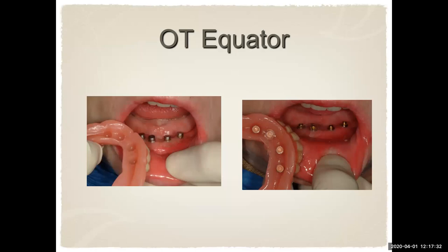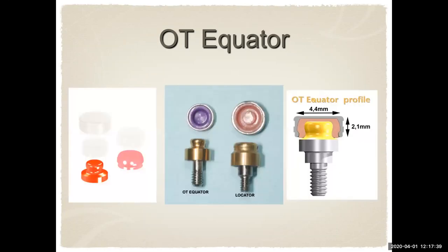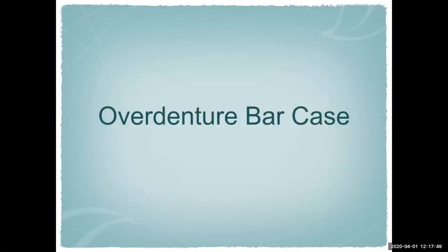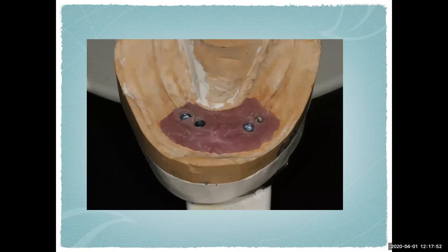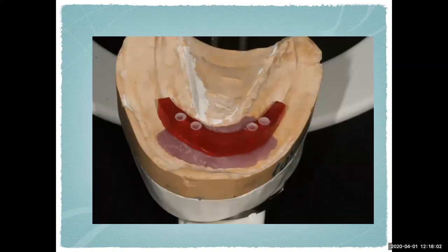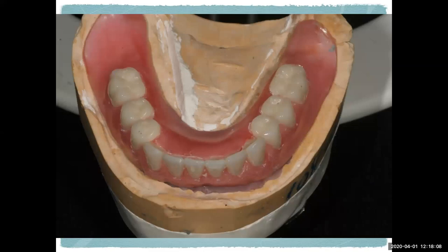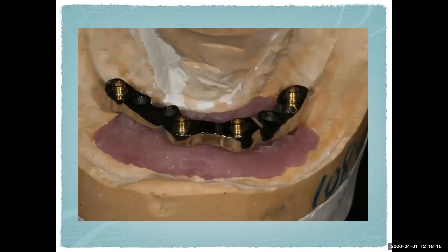This is a particular over-bar denture case where another laboratory was having so much trouble. The verification index was done before I got the case — we tried in the verification index, saw everything was good, had the bite registration, did a denture setup, made a strengthener, and did the bar design with four equator attachments. On the denture try-in, I incorporated the chrome cobalt strengthener and actually processed the attachments to the framework. The try-in went very well, and the finished denture processed and ready to go was a very nice denture.